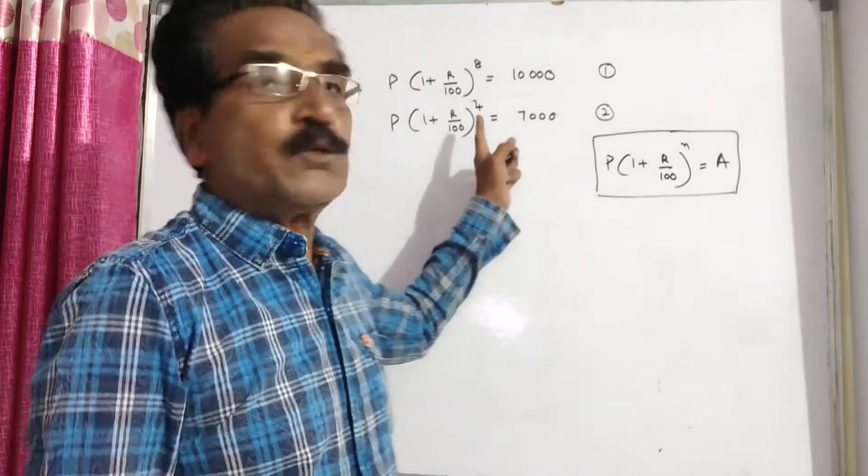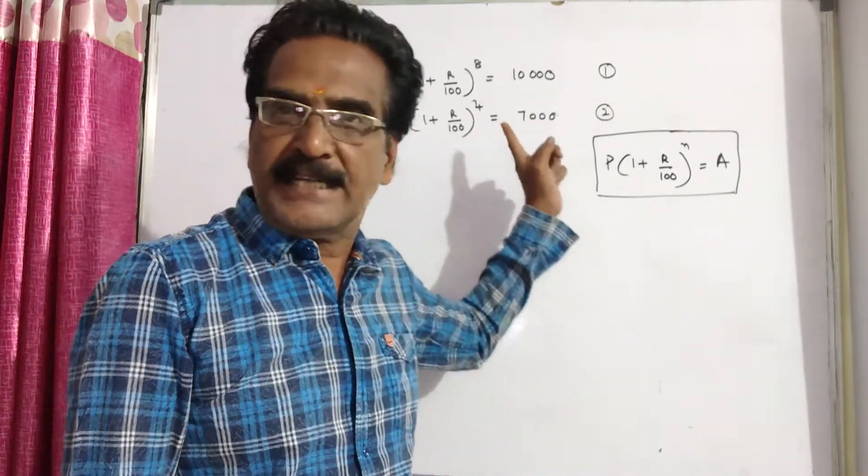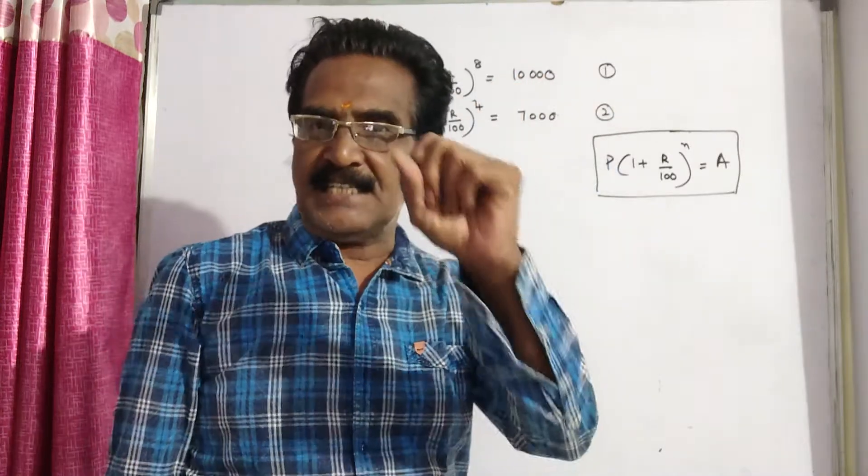A certain sum amounts to 7,000 in 4 years and 10,000 in 8 years. What is the sum?